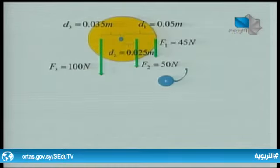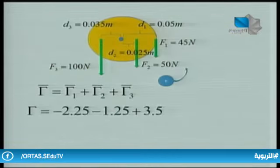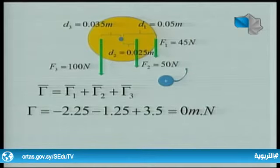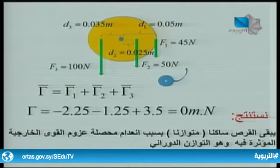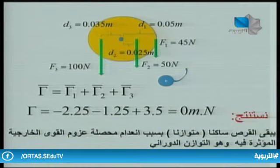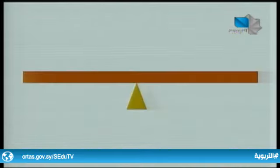محصلة عزوم القوى الخارجية المؤثرة تساوي صفر متر·نيوتن، أي أن القرص في حالة توازن ويبقى ساكناً بسبب انعدام محصلة عزوم القوى الخارجية المؤثرة فيه. وهذا هو شرط التوازن الدوراني.